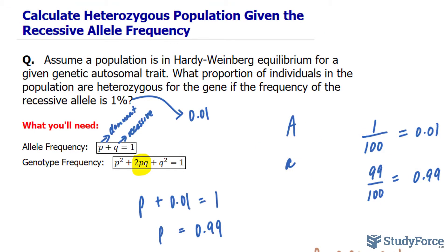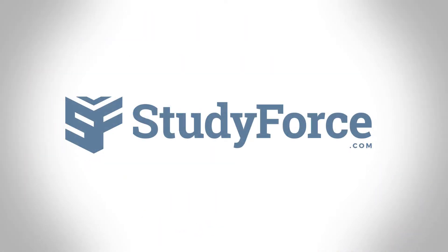And there you have it. Now you know how to calculate the heterozygous population when given the recessive allele frequency.